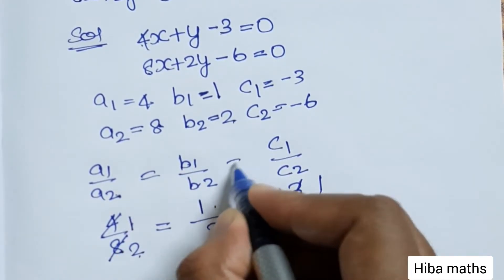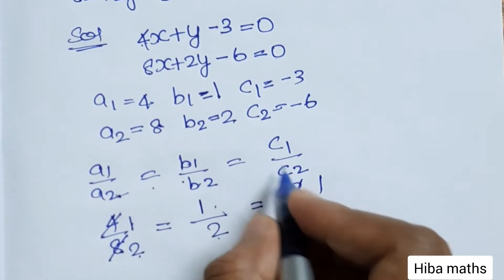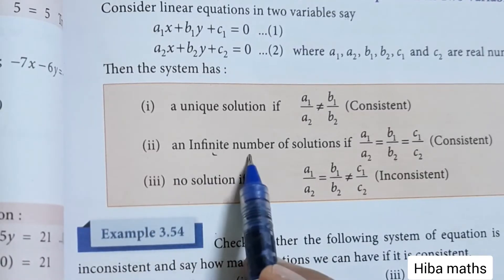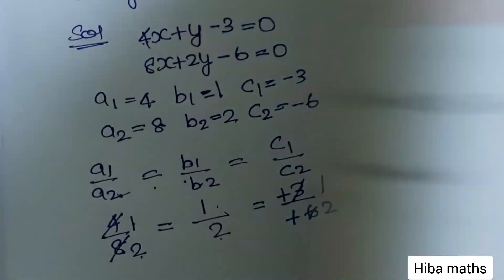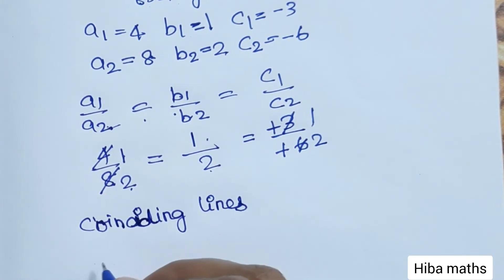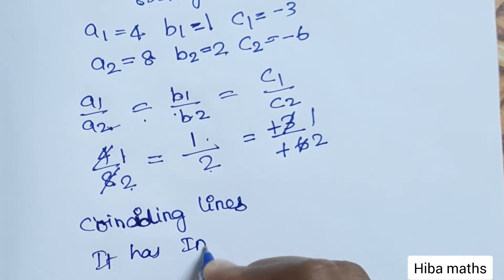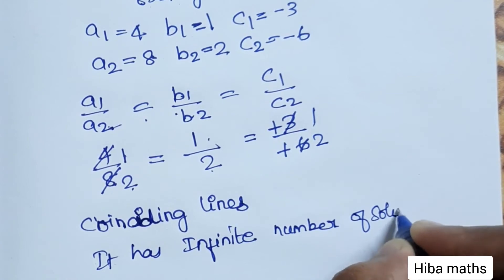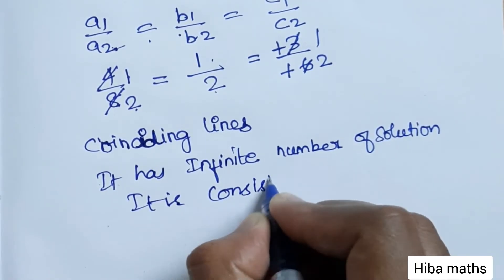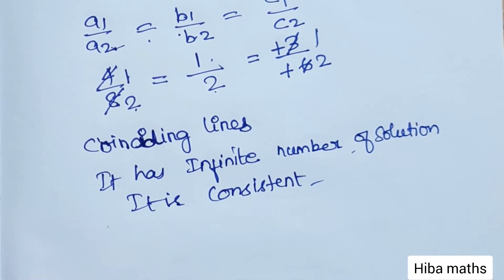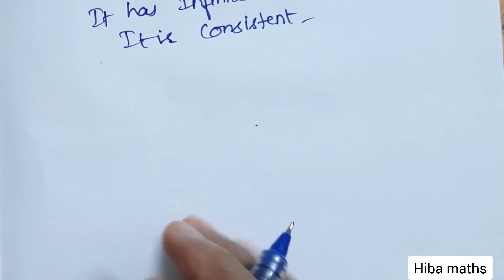Checking the condition: A1/A2 equals B1/B2 equals C1/C2. We get 4/8 equals 1/2, 1/2 equals 1/2, and minus 3 over minus 6 equals 1/2. All three ratios are equal, so this system has an infinite number of solutions. It represents coinciding lines and is consistent.